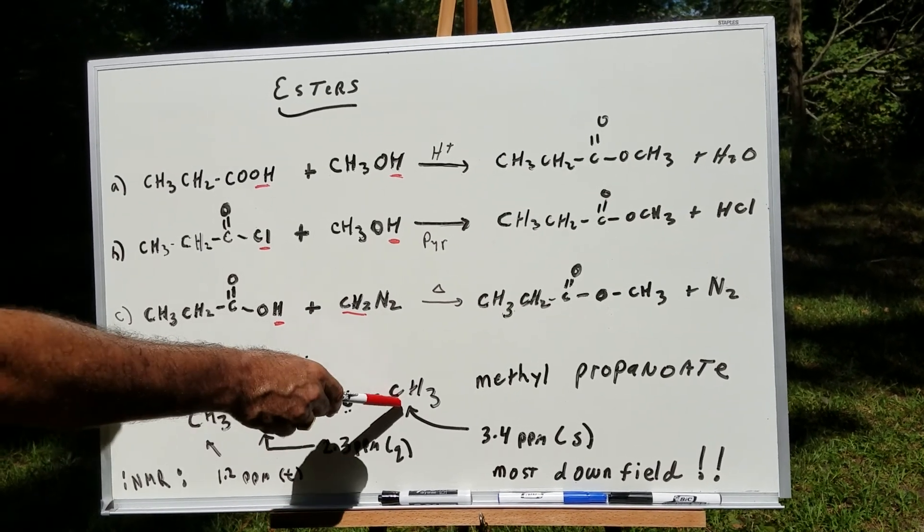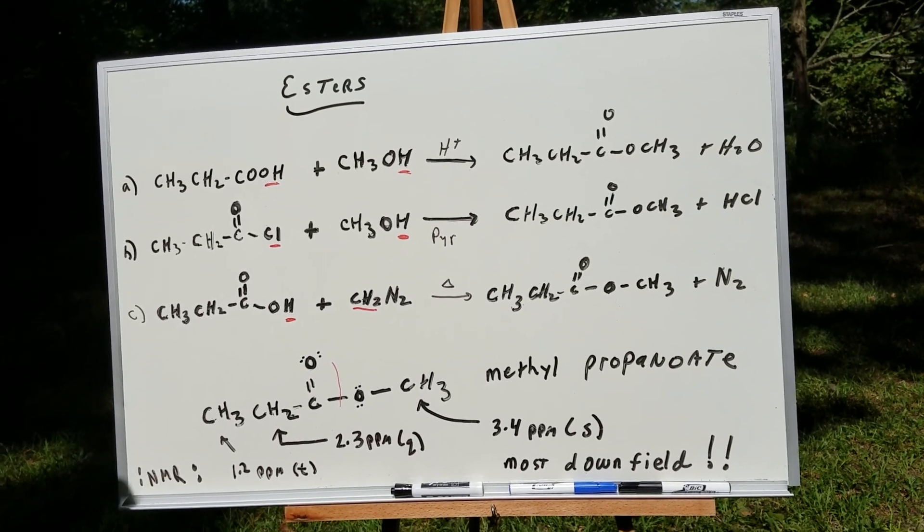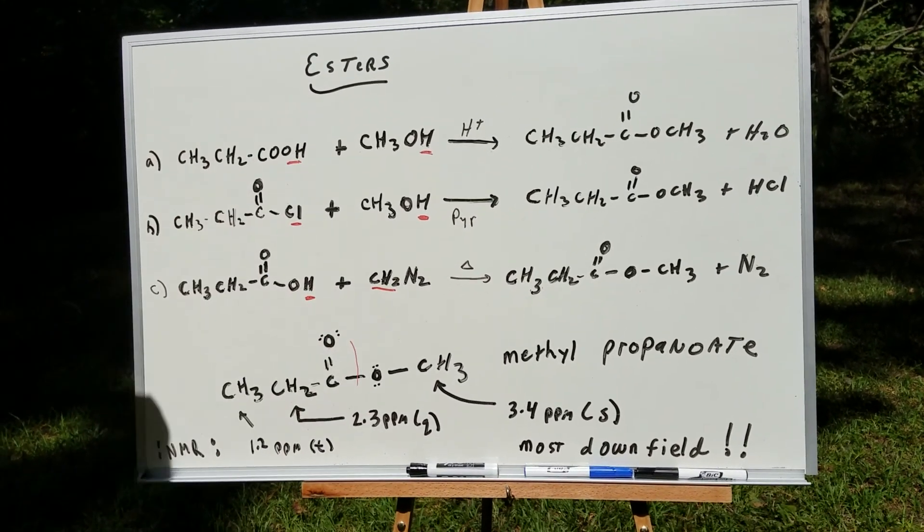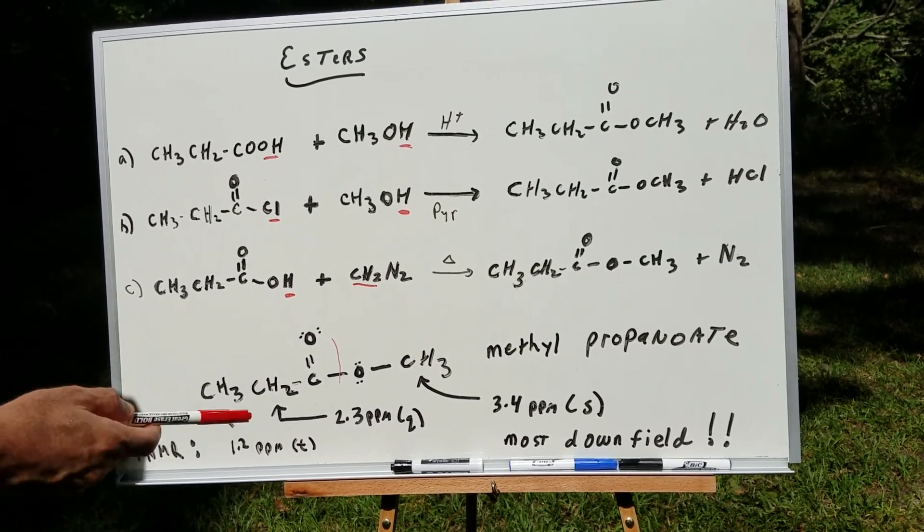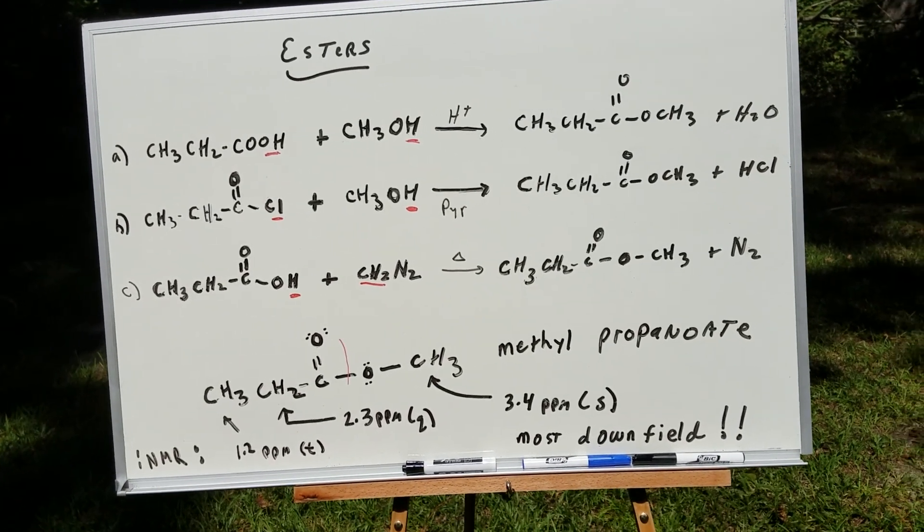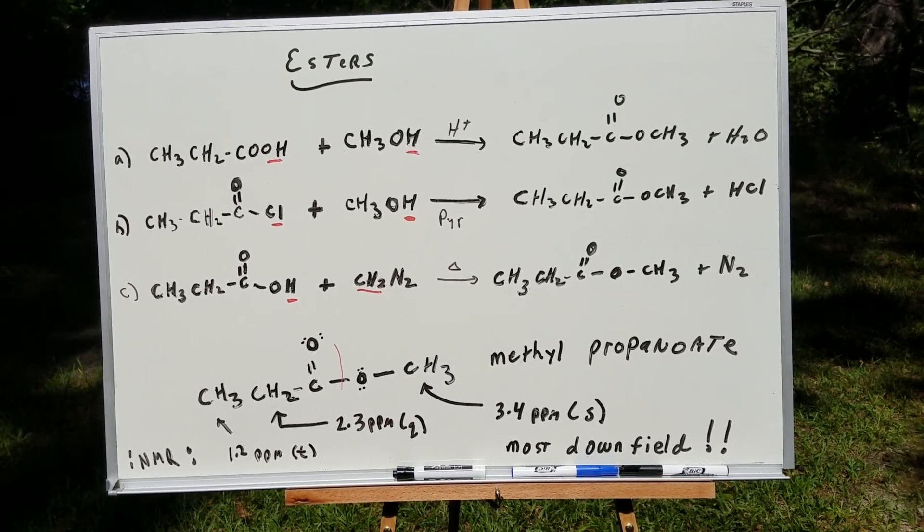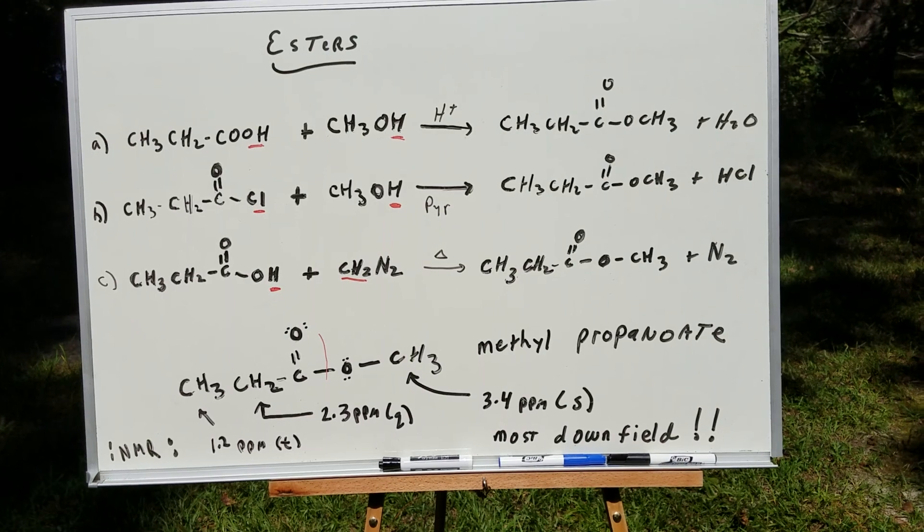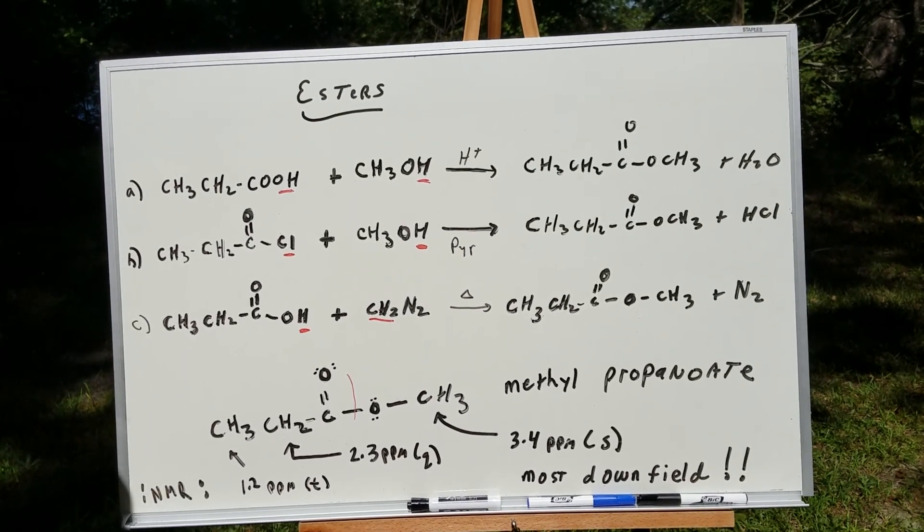And then finally, the most downfield signal, where would that be about? Well, if it was just a CH3 next to an oxygen, it would be about 3.0. But this is next to a carbonyl and oxygen, so it would be about 3.4. So I would expect downfield to see a 3.4 ppm singlet. So you get a singlet, a triplet, and a quartet for methyl propanoate.